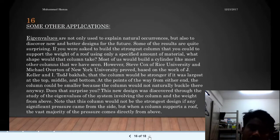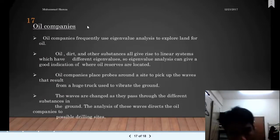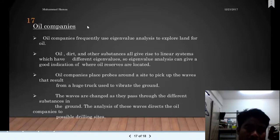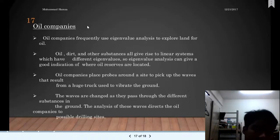Lastly, in oil companies: Oil companies frequently use eigenvalue analysis to explore land for oil. Oil, dirt, and other substances give rise to linear systems which have different eigenvalues. So eigenvalue analysis can give a good indication of where oil reserves are located. Oil companies place probes around a site to pick up the waves that result from a large truck used to vibrate the ground. The waves are changed as they pass through the different substances in the ground. The analysis of these waves directs the oil companies to possible drilling sites.